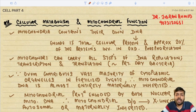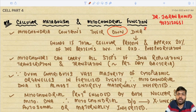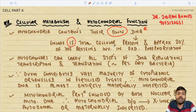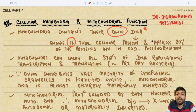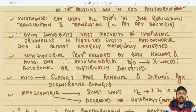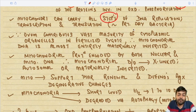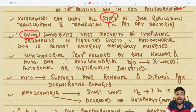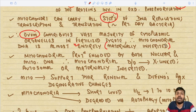The mitochondria contains its own DNA, which encodes 1% of the total cellular proteins and approximately 20% of the proteins involved in oxidative phosphorylation. It can carry out all the steps of DNA replication, transcription, and translation - very similar to present-day bacteria. Since the ovum contributes the vast majority of cytoplasmic organelles in a fertilized zygote, the mitochondrial DNA is almost entirely maternally inherited.